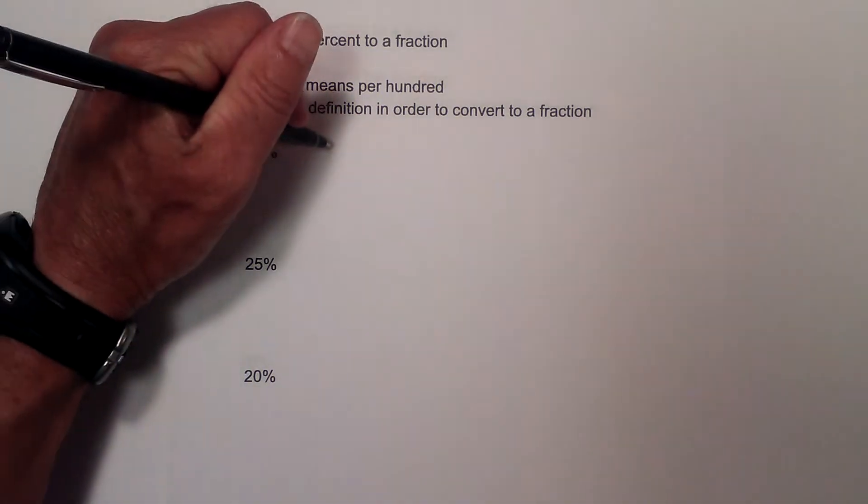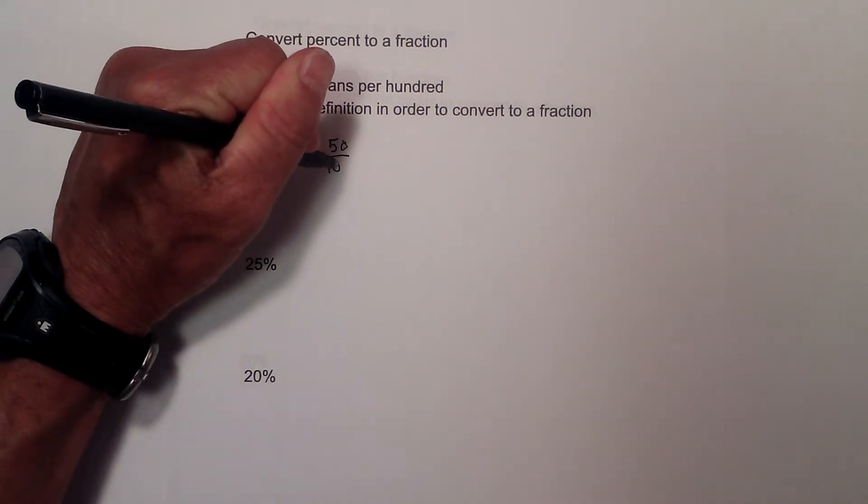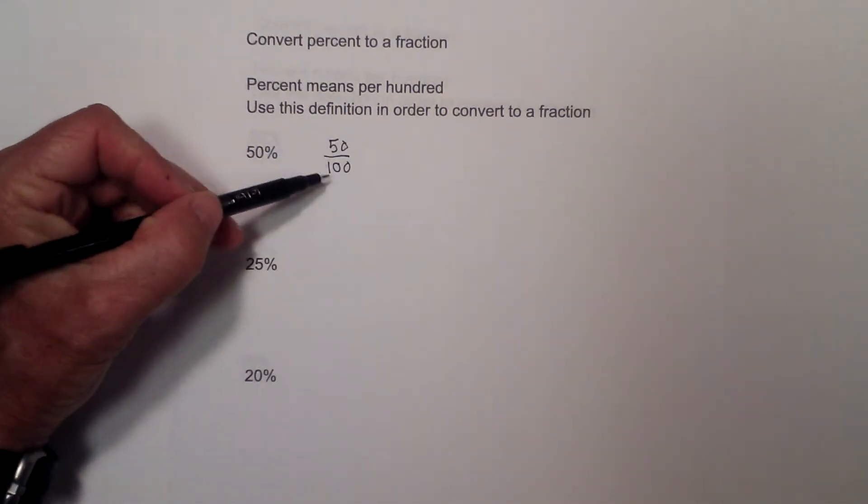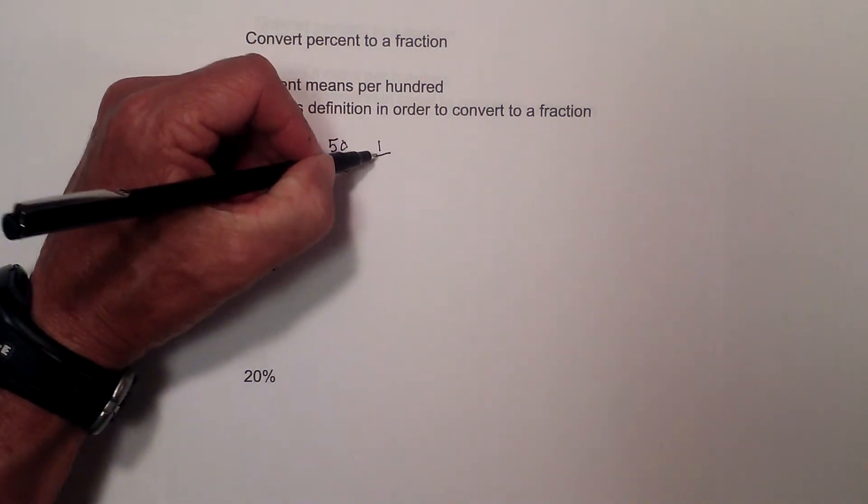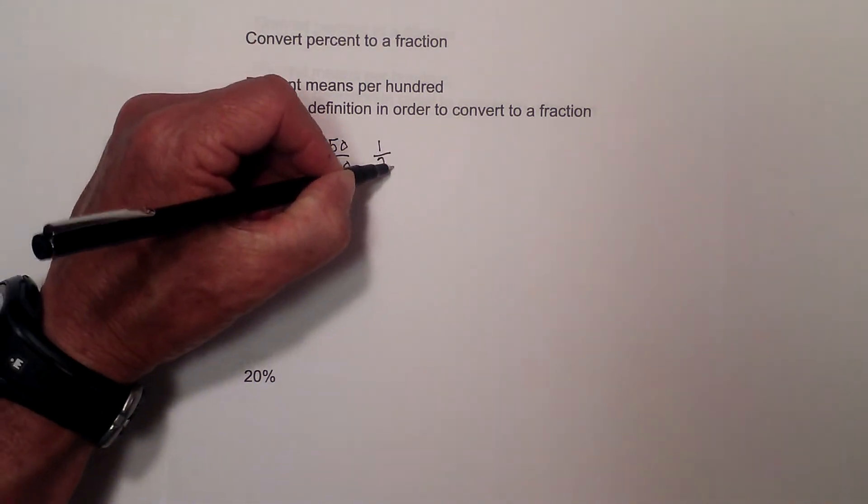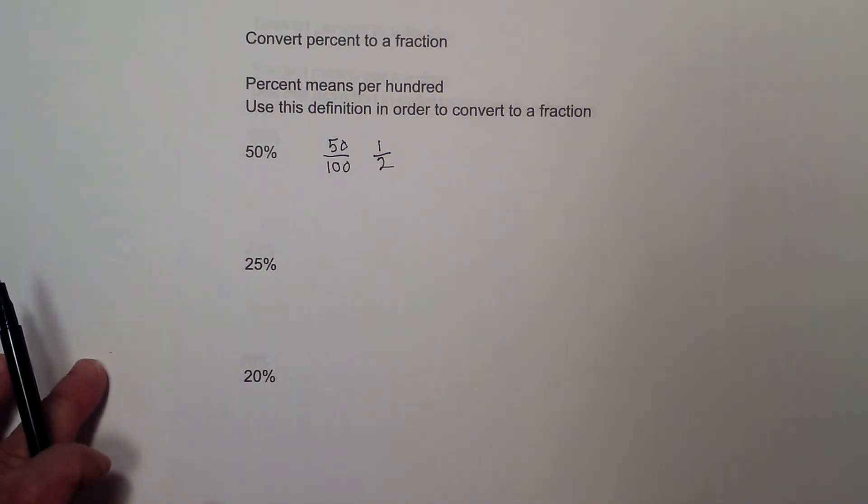So if we have 50%, we can just go 50 over 100 and then I can reduce this. I know 50 goes into 50 one time and 50 goes into 100 two times. So 50% would be in fraction form one half.